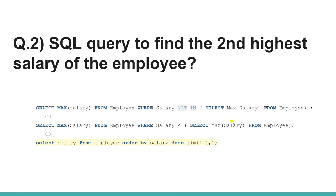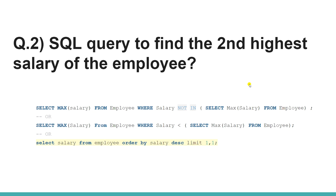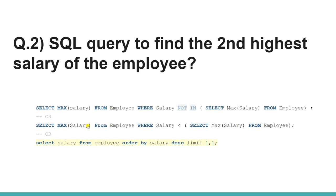The second question is basically a subset of the first one — we have to find the second highest salary of an employee. If you look at the first query for the nth highest, you just replace N with 2 and that gives you the answer to this question.